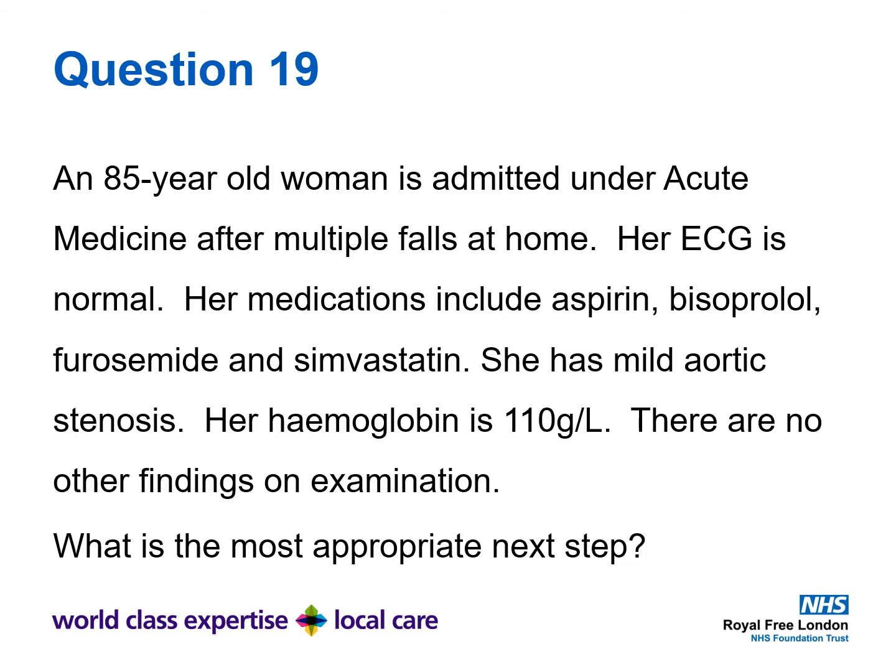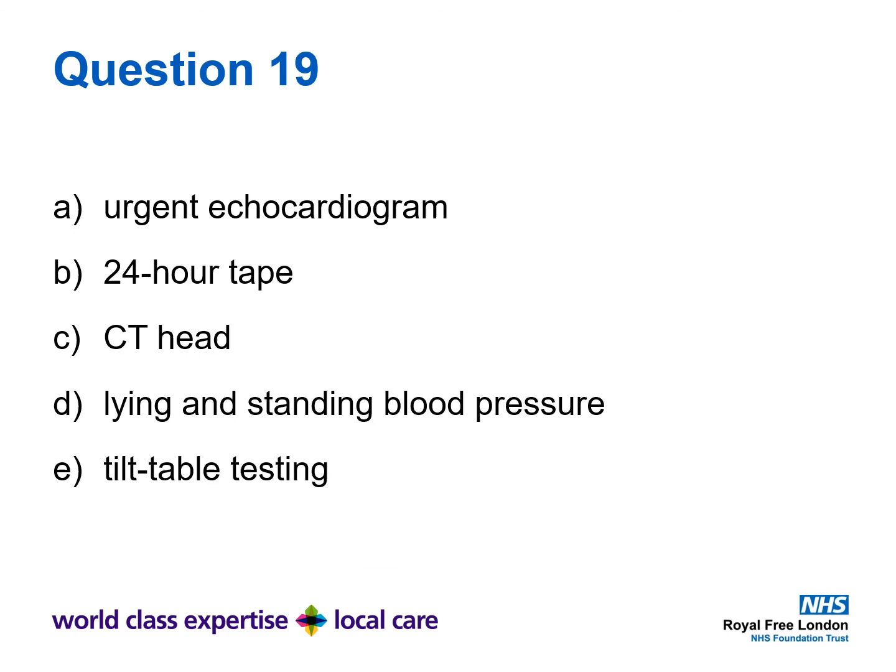Question 19. An 85 year old woman is admitted under acute medicine after multiple falls at home. Her ECG is normal. Her medications include aspirin, bisoprolol, furosemide and simvastatin. She has mild aortic stenosis. Her haemoglobin is 110 grams per litre. There are no other findings on examination. What is the most appropriate next step? A: Urgent echocardiogram, B: 24-hour tape, C: CT head, D: lying and standing blood pressure, or E: tilt table testing?